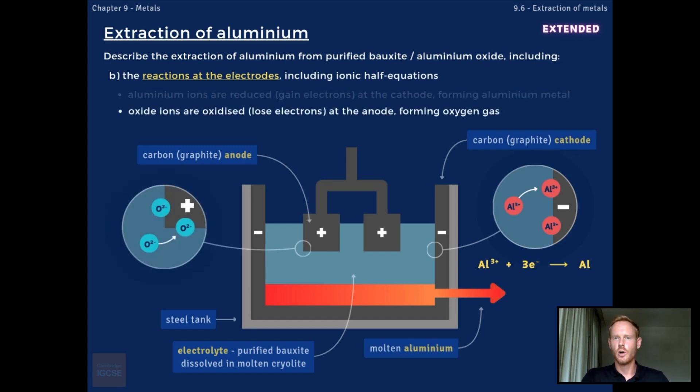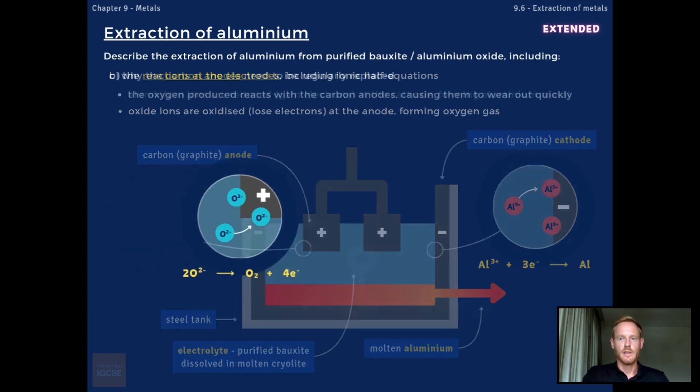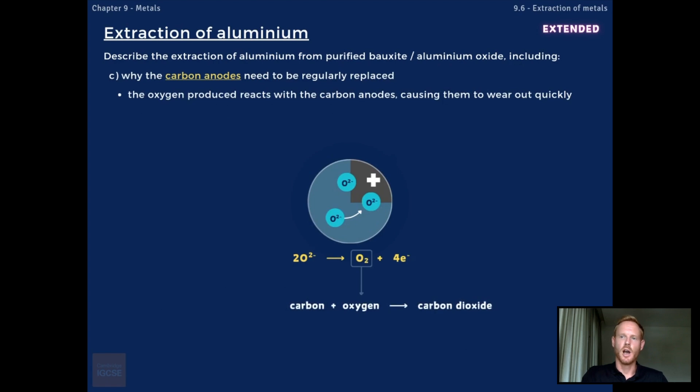At the anodes, oxide ions are oxidised, forming oxygen gas. The ionic half equation for this reaction shows that two oxide ions lose four electrons to form one oxygen molecule. Now, the oxygen produced reacts with the carbon anodes, forming carbon dioxide gas. Because of this, the anodes wear out over time and need to be replaced regularly.